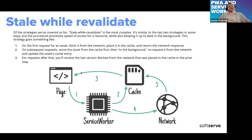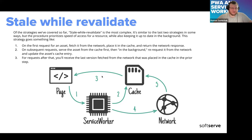Stale-while-revalidate is a more complex but useful strategy when you want to keep your cache always up to date. When the web application makes a network request, the service worker intercepts it and provides data from the cache, but in the background it also fires a network request to get fresh data and puts that into the cache. In that way, the service worker keeps the cache updated, so you can be sure all your cached data will be up to date.